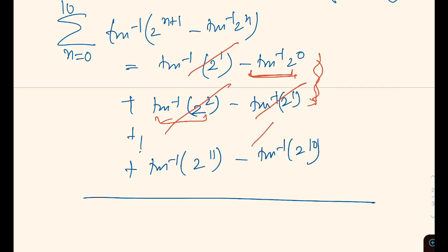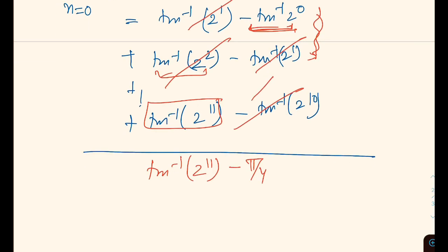This equals tan inverse of (2 raised to the power 11 minus 1) over (1 plus 2 raised to the power 11), which simplifies to cot inverse of (1 plus 2 to the power 11) over (2 to the power 11 minus 1).